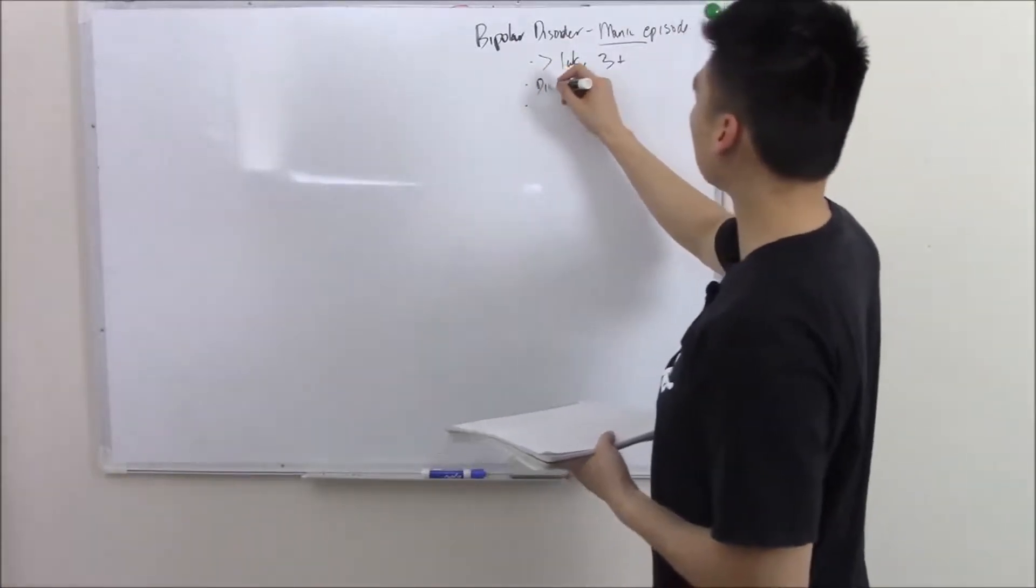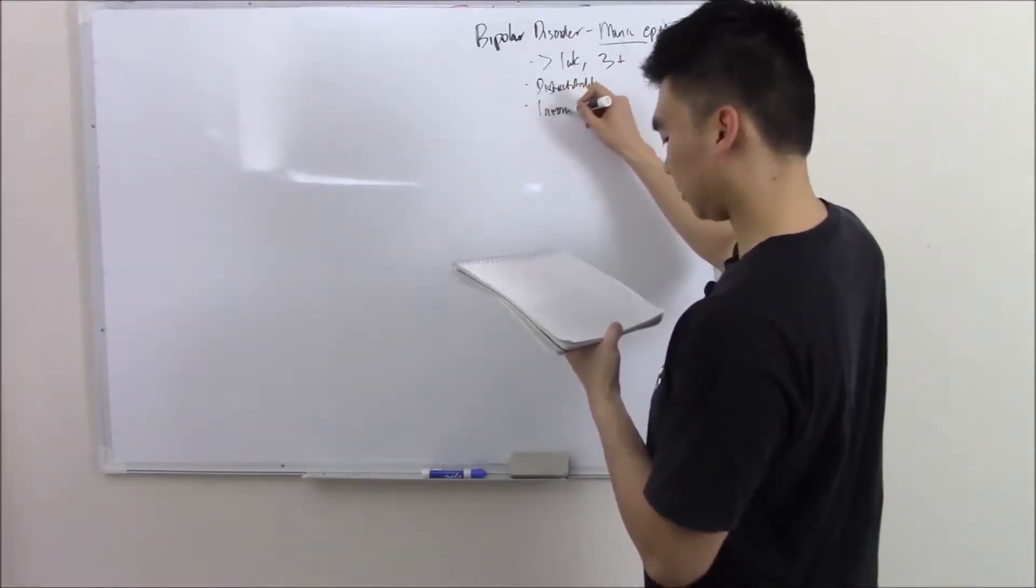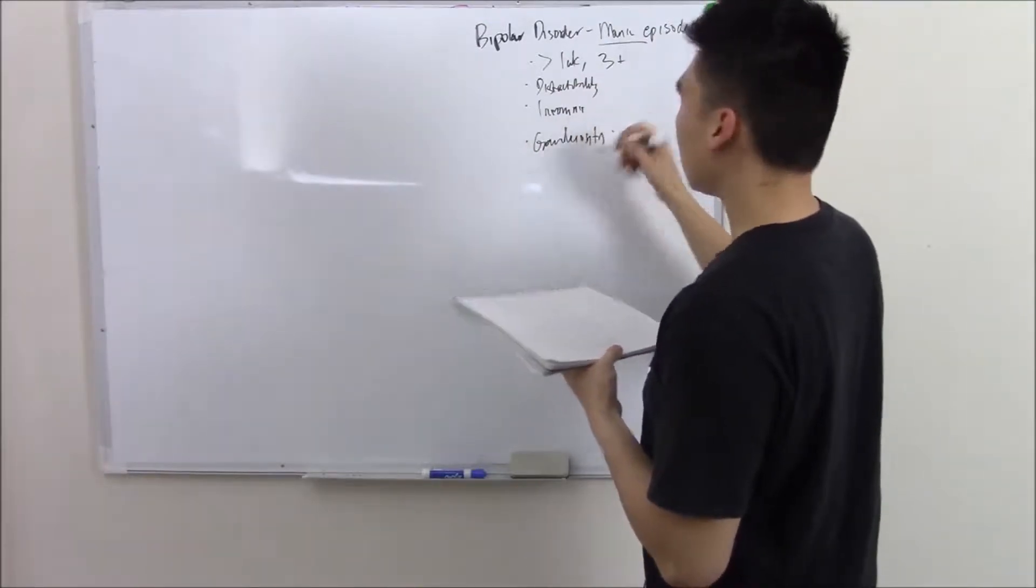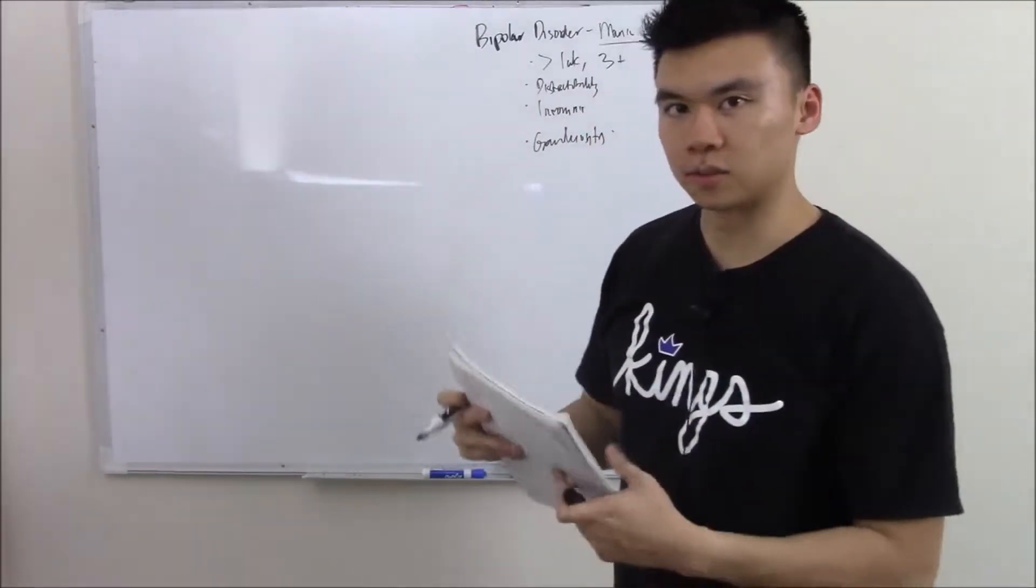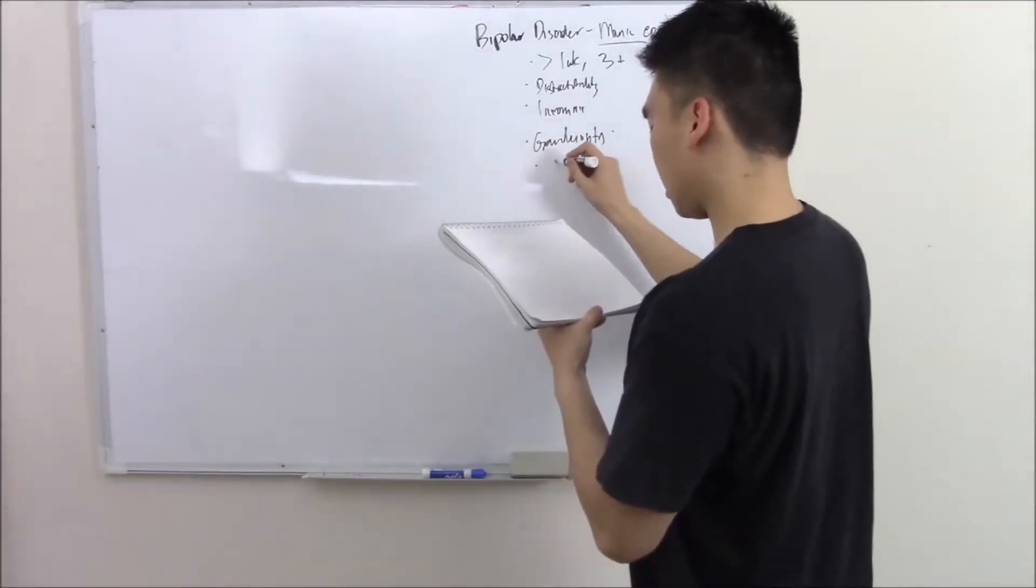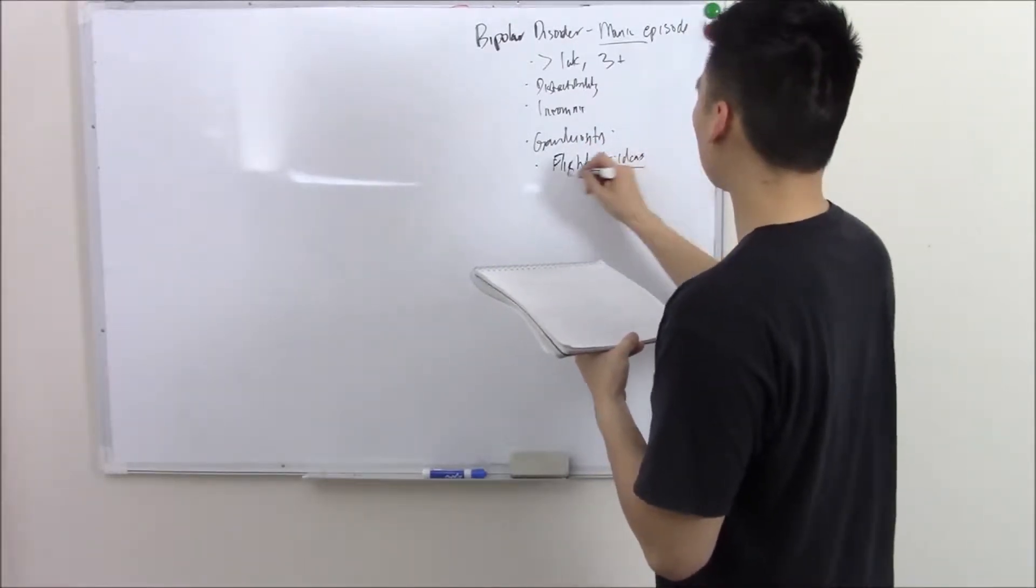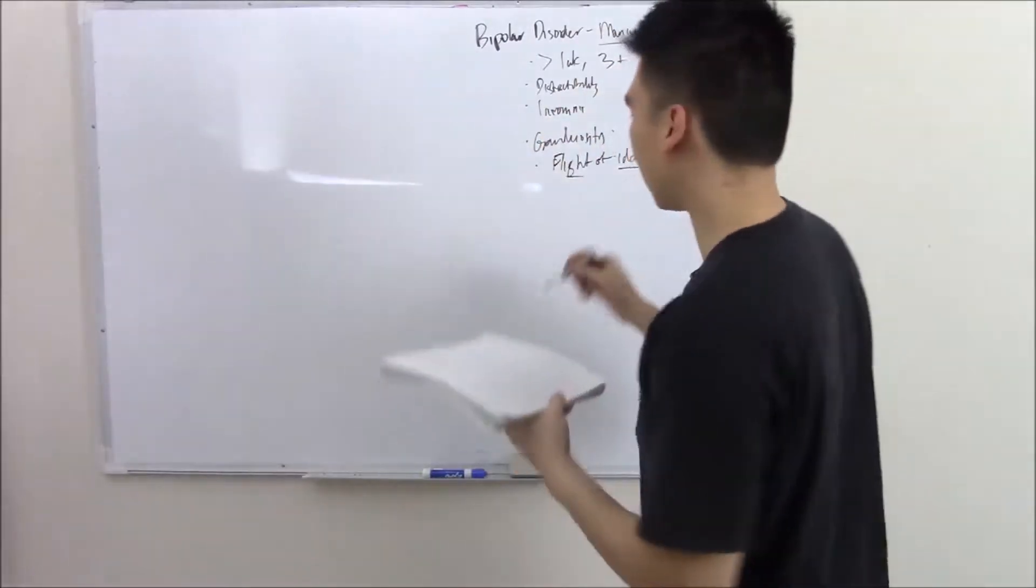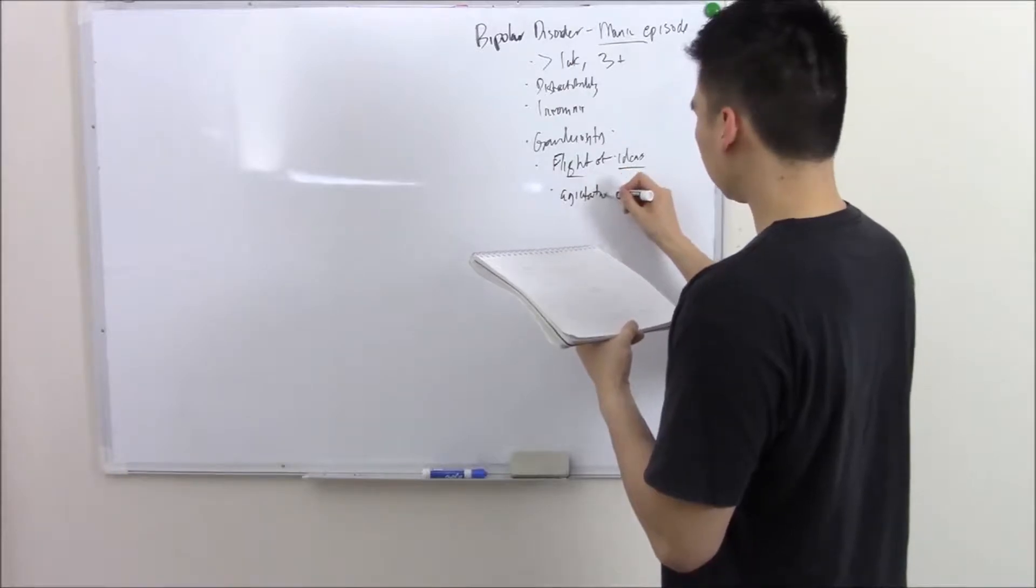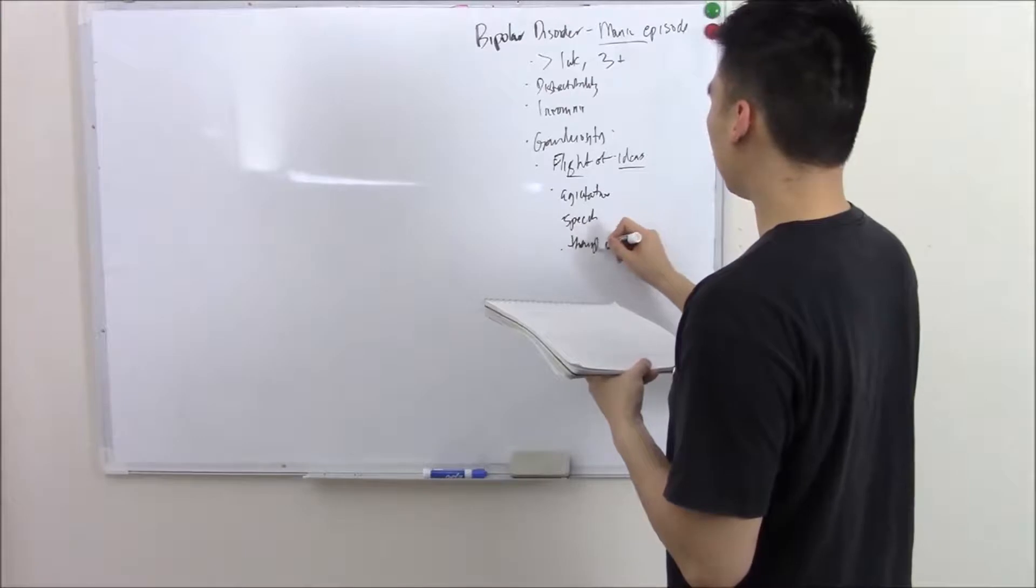And these symptoms include distractibility, insomnia, they just can't sleep, grandiosity. They think they have this great self-image of themselves. They think they're this great person. They can do all these things. Flight of ideas. They feel like there's a thousand ideas going through their mind at once. Agitation or activity. Speech. Flight of speech. And thoughtlessness, which is basically recklessness.